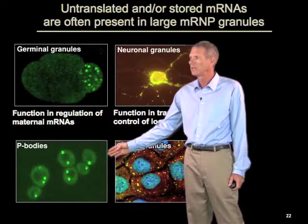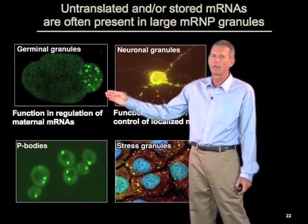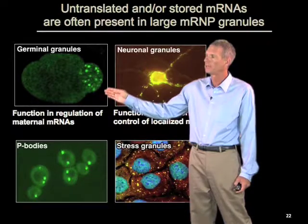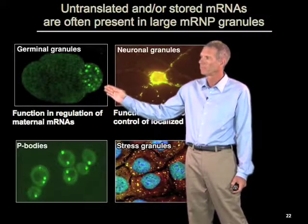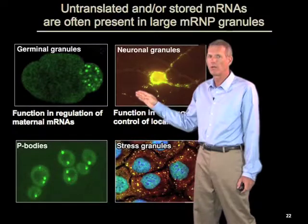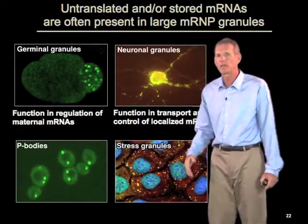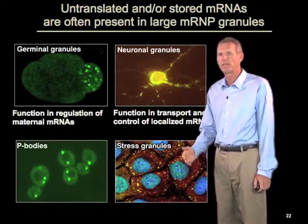Similarly, mRNAs that are repressed in germ cells — where maternal mRNAs are made by the mother, deposited in the oocyte, and used in the embryo at certain places and times to direct development — are stored in what are called germinal granules. These different types of RNA granules are all related to each other and use a common set of RNA binding proteins to regulate the translation and even degradation of many of these mRNAs.